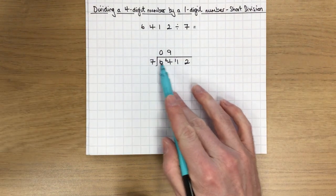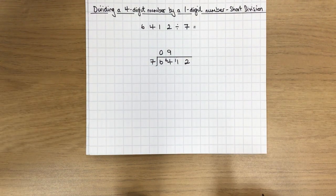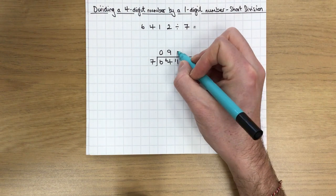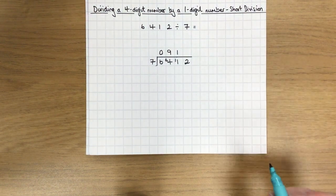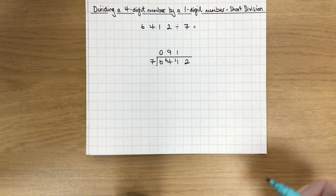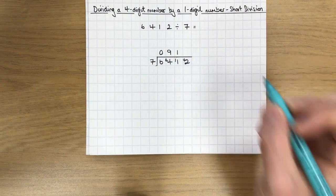Now I have to do 7 into 11. 7 times 1 is 7, but I have 4 left over from 7 up to 11, because 11 take away 7 is 4. So I need to carry that 4 forward.